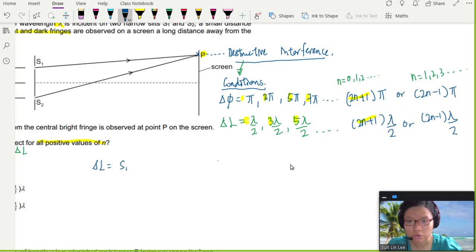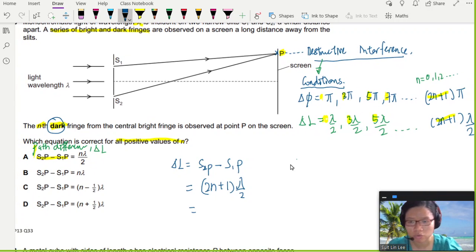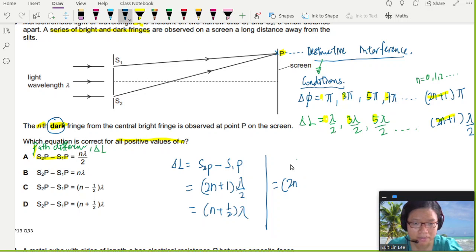Your path difference, which is your S2p, the longer wave that travels a further distance, minus S1p, has to be (2n+1) lambda over 2, or (2n-1) lambda over 2, depends on where you start your value of n. So in this case, I can open up the bracket, multiply in, whether I need to do it or not, I need to check. I don't need to, but there's no over 2 for lambda, so I'm going to push the lambda in. So when I push that lambda in, I will notice that this one will be (n+1/2) lambda. And the other option will be (2n-1) lambda over 2, then this will be (n-1/2) lambda. Oh no, which one to choose? Because both options are available, right?